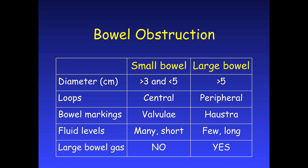Just to recap how to differentiate between small bowel and large bowel. Diameter: large bowel is usually more than 5 centimetres. Position: small bowel is mainly central, large bowel is peripheral. Bowel markings: small bowel has continuous rings — valvulae conniventes — going all the way across; large bowel has incomplete, wide-spaced rings — haustra. Fluid levels: many short ones in the small bowel, few long ones in the large bowel. Large bowel usually contains gas; in the small bowel you don't normally see it.